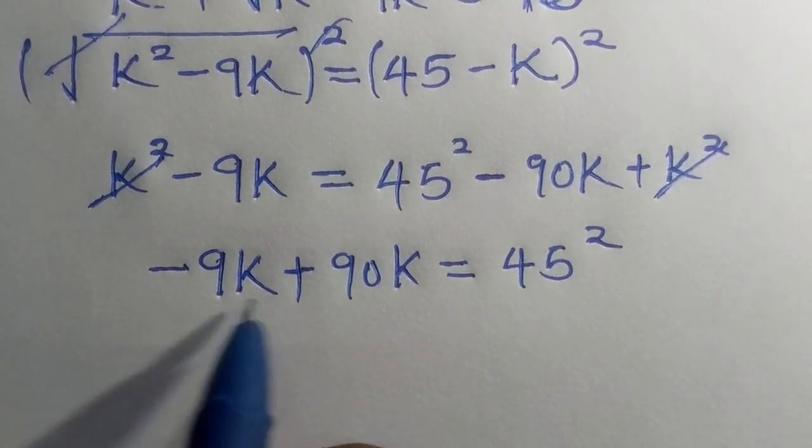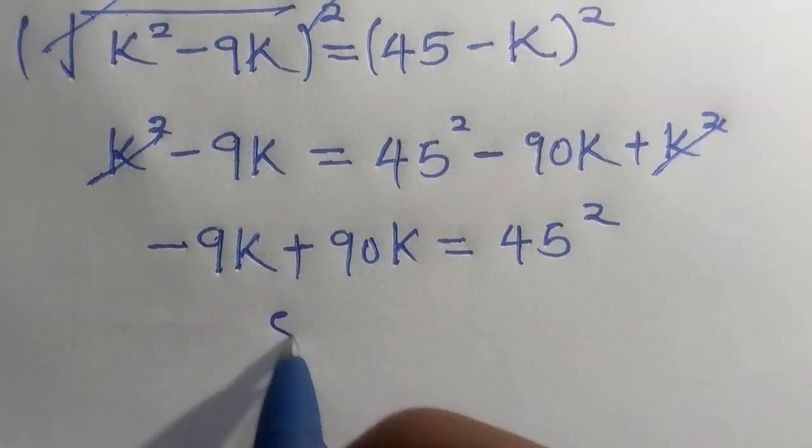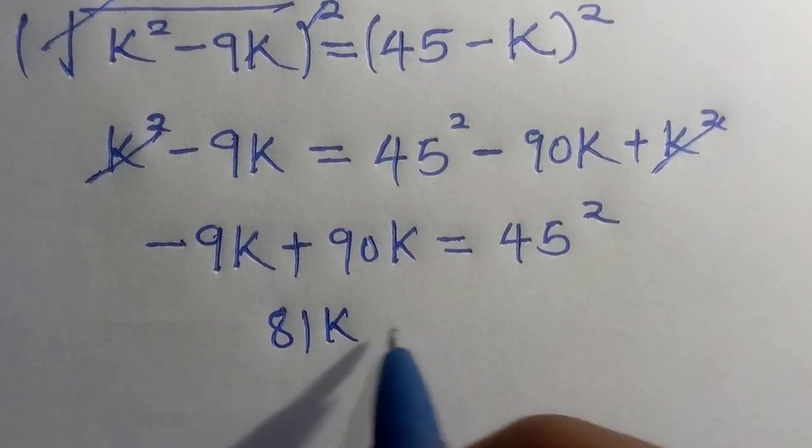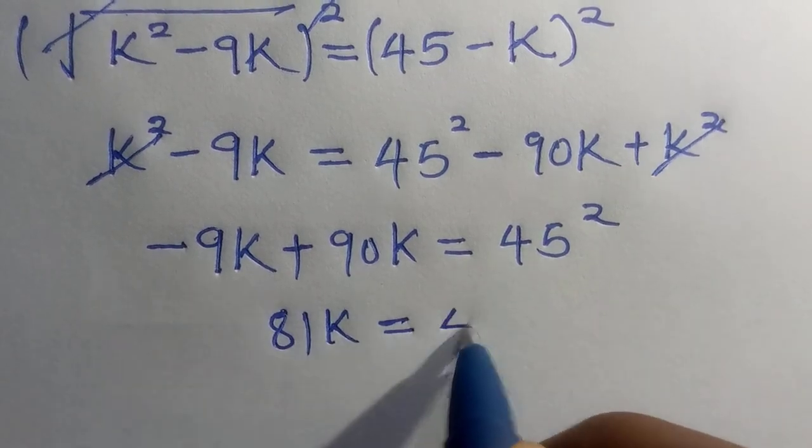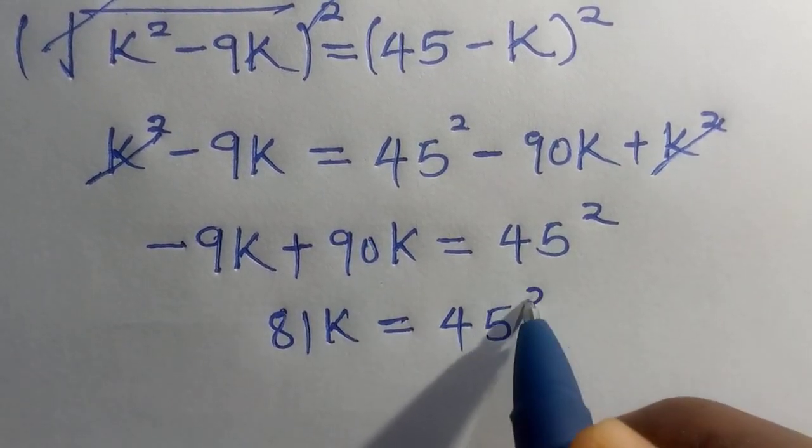And next, we have minus 9k plus 90k is 81k equals 45 square.